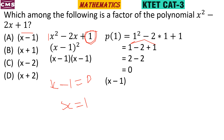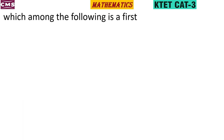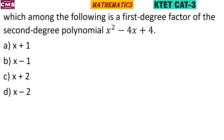If x minus 1 is the factor, we get the value. Now x²-4x+4 is a 2nd degree polynomial. We need to find the factor of x²-4x+4.